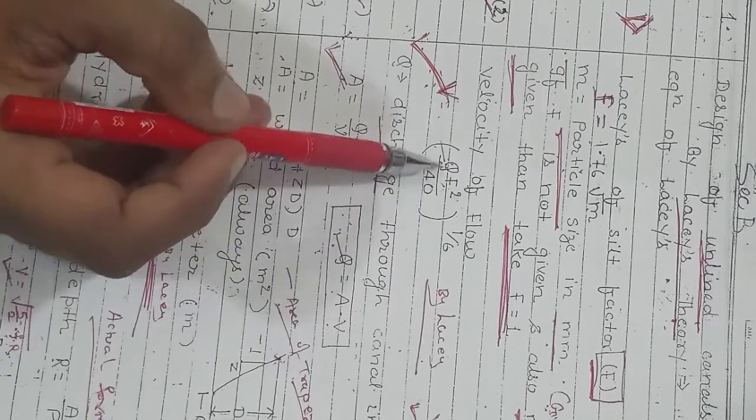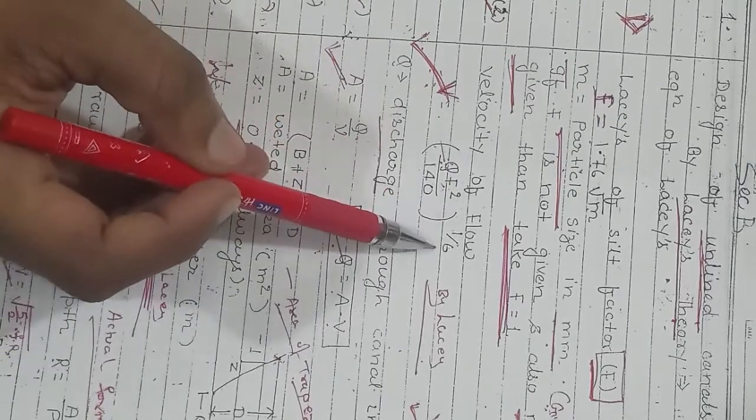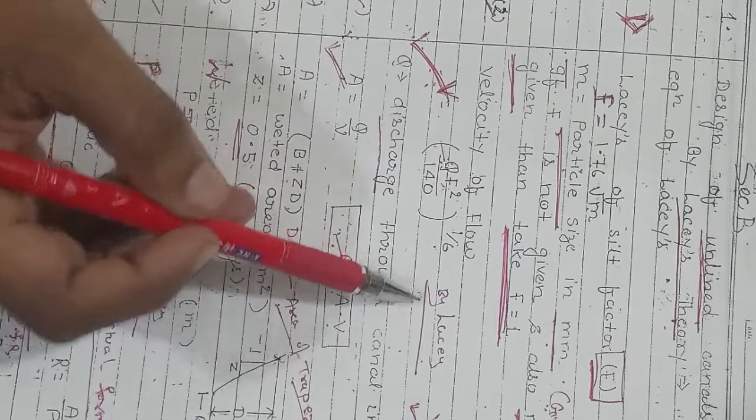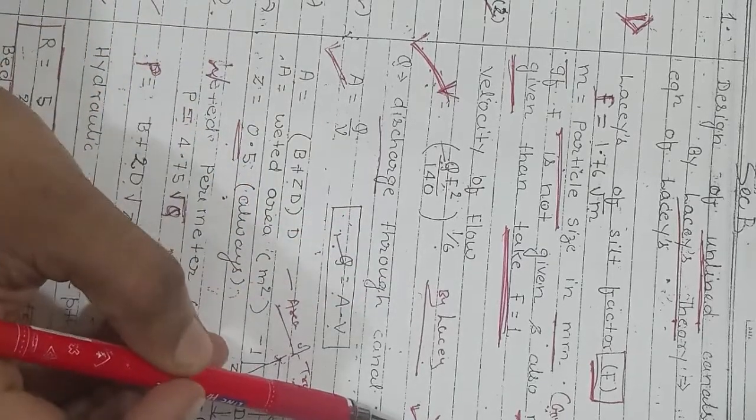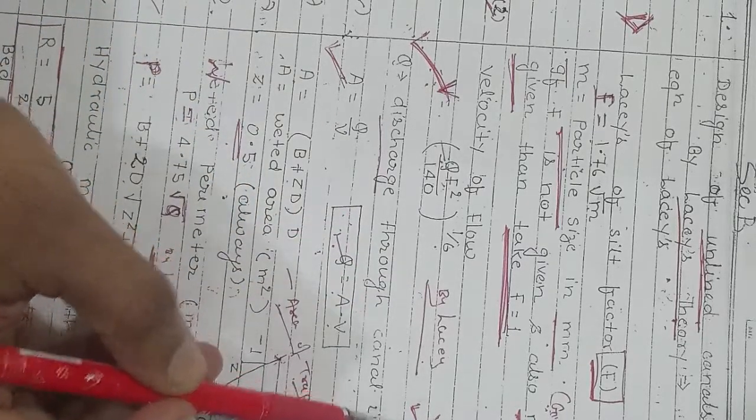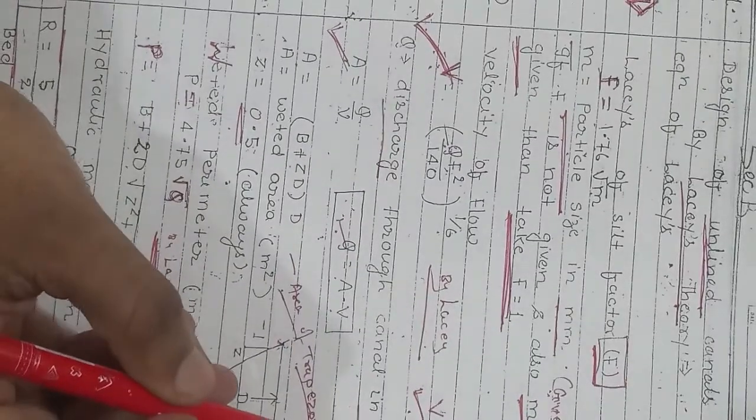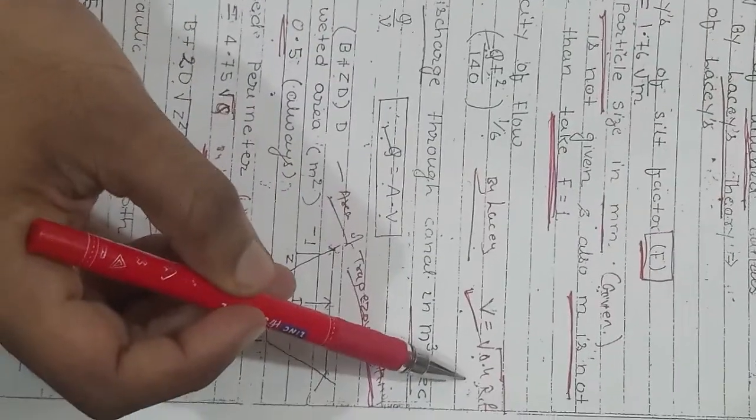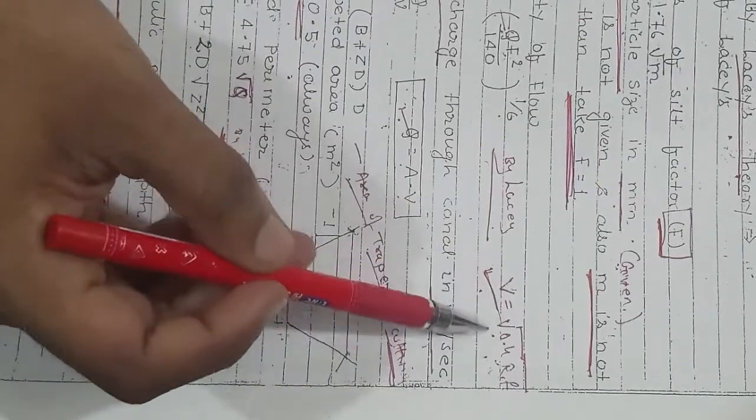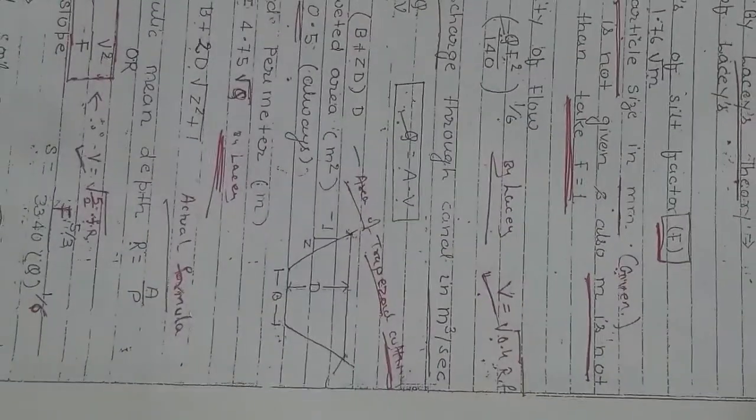Another equation he has given is V = √(0.4RF), where V equals square root of 0.4 times R times F.